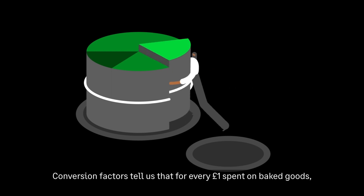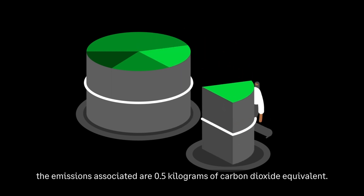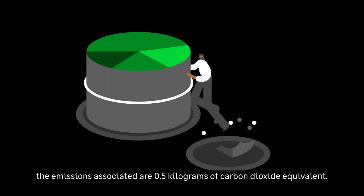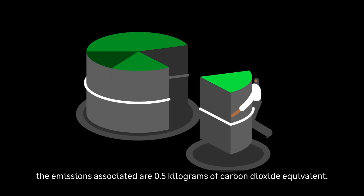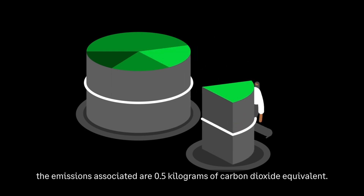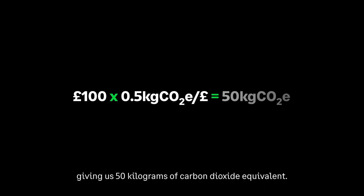So if we take 100 pounds spent on baked goods, we use the calculation: 100 multiplied by 0.5 kilograms, giving us 50 kilograms of carbon dioxide equivalent.